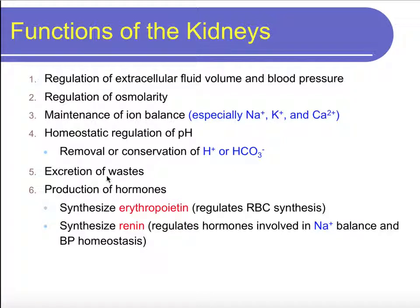The kidneys are another way we can get rid of waste from our body. A lot of the times when we start to build up things in our blood, one of the places it'll show up is in our urine. Our kidneys also produce hormones like erythropoietin, which stimulates erythropoiesis or the production of red blood cells. And then we have the hormone renin, which turns on our renin-angiotensin-aldosterone system, playing a role in sodium balance, fluid balance, and blood pressure. We'll talk more about renin in the next chapter.